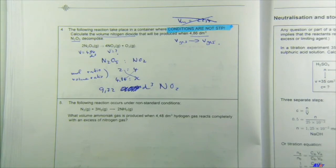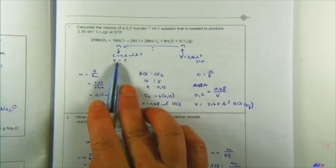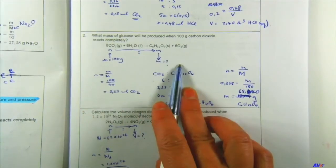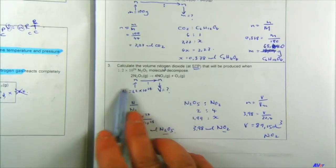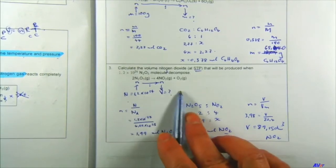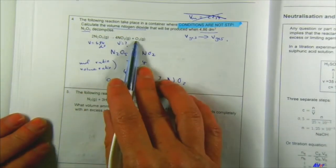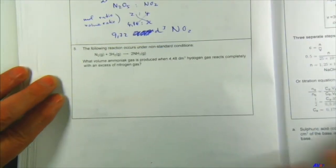When do you use this exception? When you're going from gas volume to gas volume. With previous questions: gas volume to solution volume — exception didn't apply; mass to mass — exception didn't apply; number of particles to gas volume — exception didn't apply. But gas volume to gas volume — you use the exception. Now do number five, which is also one of the exceptions.